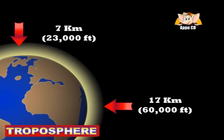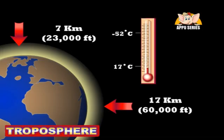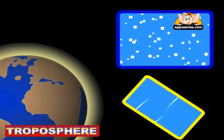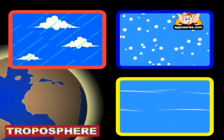As you climb higher in this layer, the temperature drops from about 17 to minus 52 degrees Celsius. The troposphere is known as the weather layer since snow, wind and rain stick to this layer.